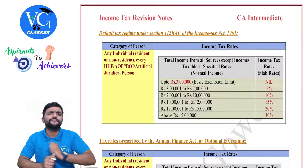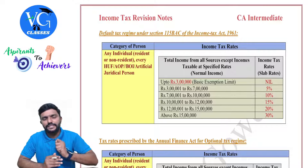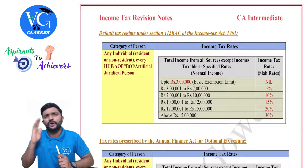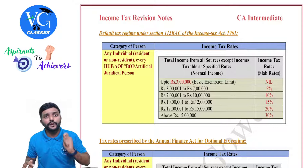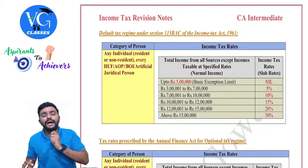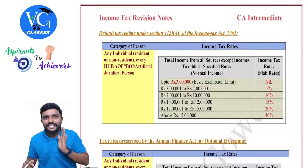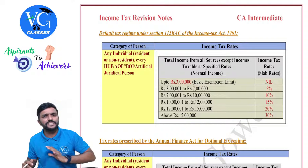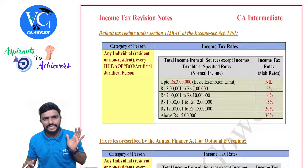First of all, section 115 BAC is applicable for which all category of associate? It is applicable for all the individuals, whether they are resident or non-residents, irrespective of their age, and also for HUF, AOP, BOI, and artificial juridical person. Whatever tax rates we are seeing now are the slab rates applicable for normal income and not on special income. The tax rates on special income will remain always the same for all category of associates.